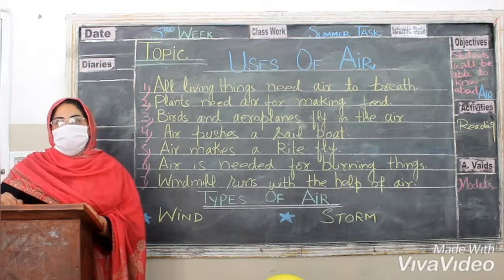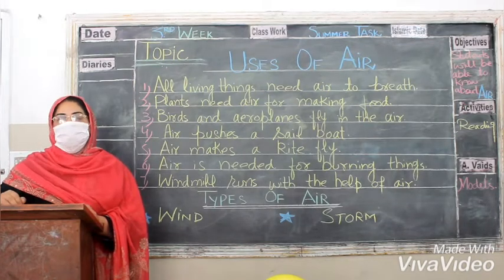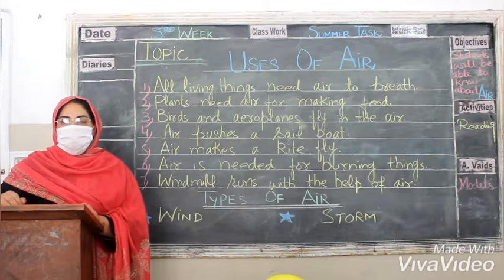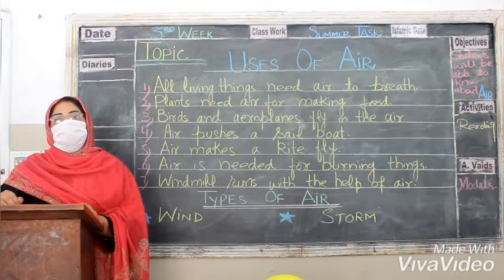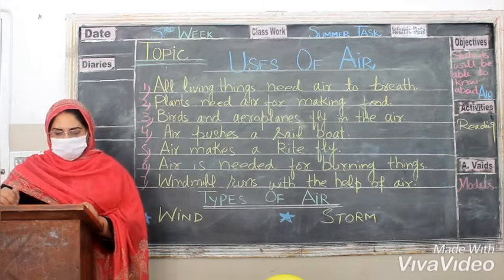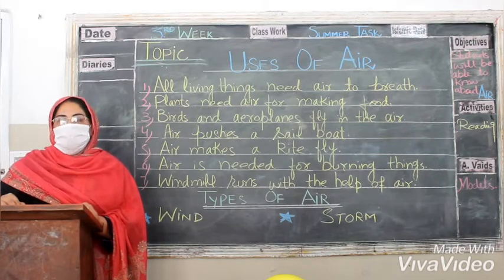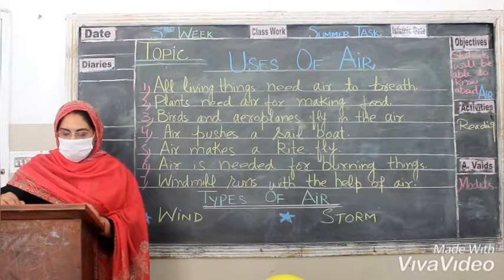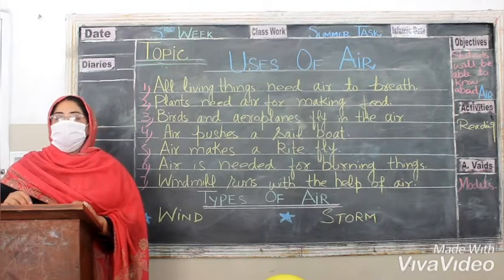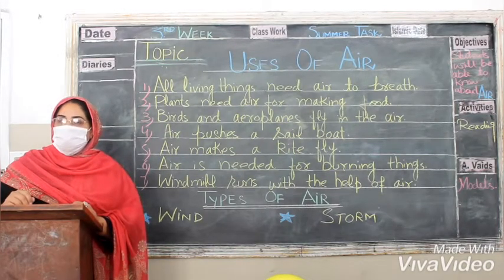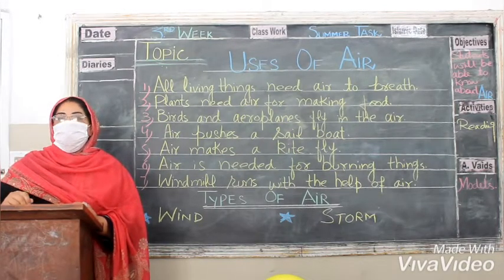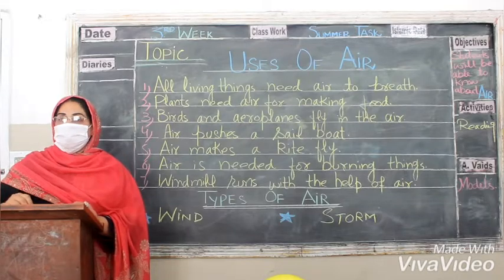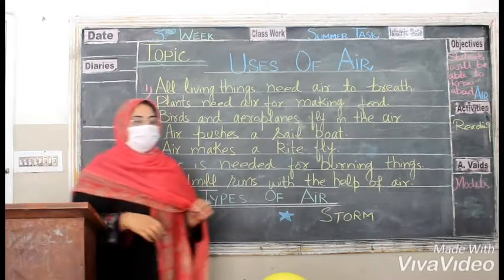Now I will tell you some uses of air. All living things need air to breathe. Plants need air for making their food. Birds and aeroplanes fly in the air. Air pushes a sailboat in the sea. So it means air is a very necessary thing for our life.